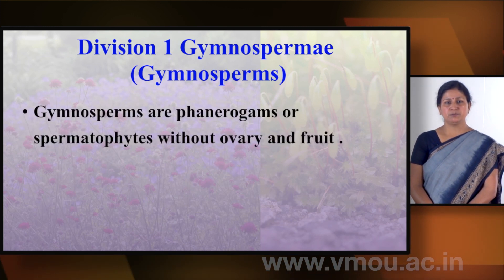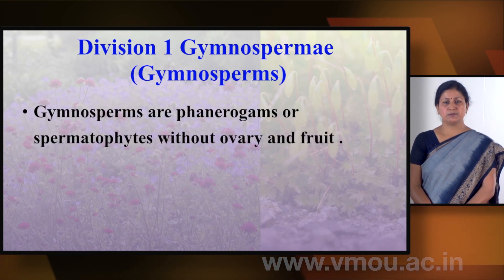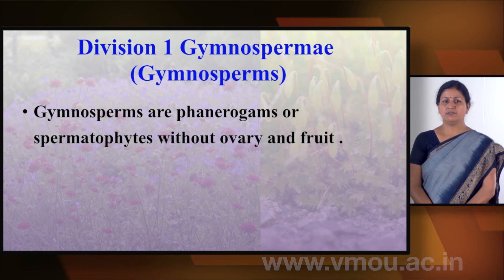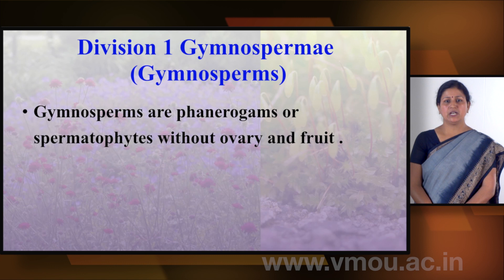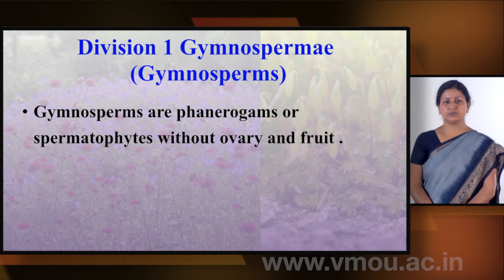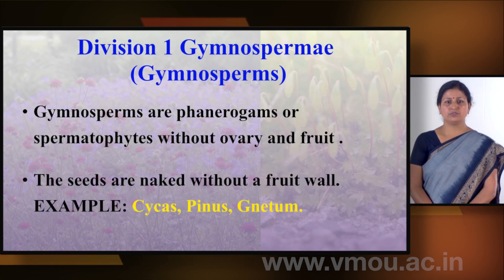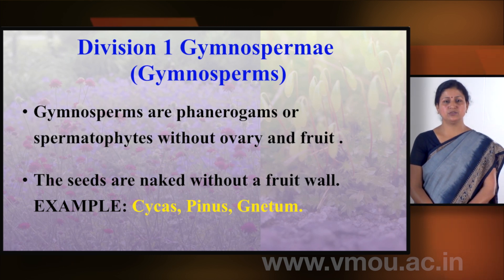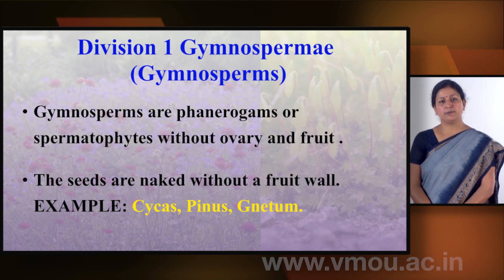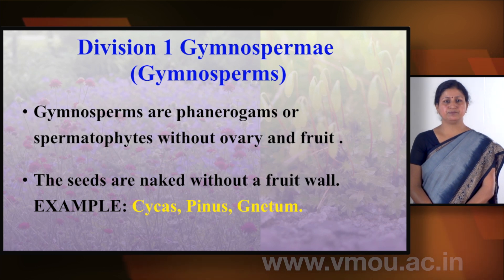The first division is Gymnospermy, which is called Gymnosperms. Gymnosperms are phanerogams — flowering plants — but are spermatophytes without an ovary or fruit. The seeds are naked, meaning there is no fruit wall enclosing them. Examples are Cycas, Pinus, and Gnetum.